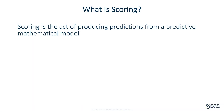What exactly is scoring? Scoring is the act of producing predictions from a predictive mathematical model. Scoring is not something that is new to statistics or to SAS. PROC REG provided a method for scoring when it was first introduced in the very early versions of SAS software. What is new are some of the techniques available for scoring in SAS.